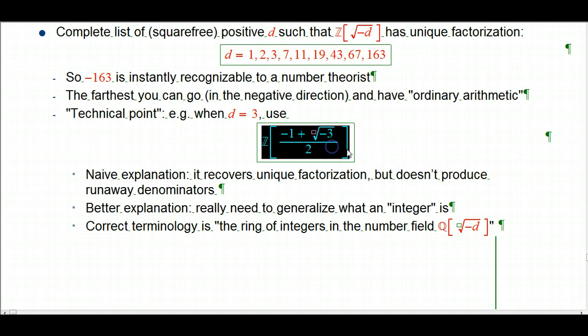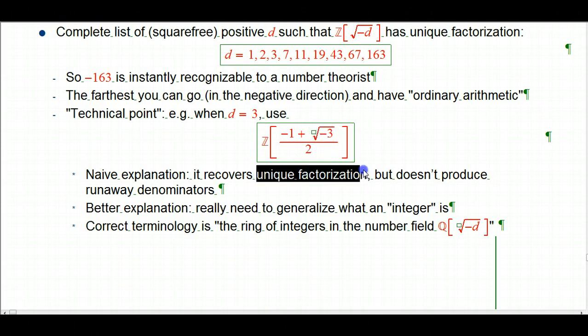The naive explanation is this: The main thing is to get something where you bring root minus 3 into the picture, and you would like to get something that has unique factorization. It turns out that this does have unique factorization, if you put in the over 2, not if you don't. The big problem with putting in the over 2 is it is liable to produce what you could call runaway denominators. In a lot of situations, if you start dividing by 2, you're gonna end up having to divide by 4, by 8, by 16, by 32, by arbitrarily large powers of 2, and then you're not in at all the same situation as before. Turns out that in certain situations with certain values of D, this is perfectly legal and a really good idea, and it doesn't actually produce runaway denominators. So that's a naive explanation.